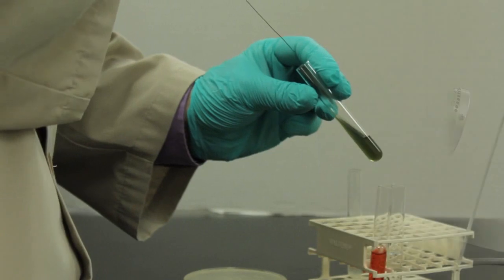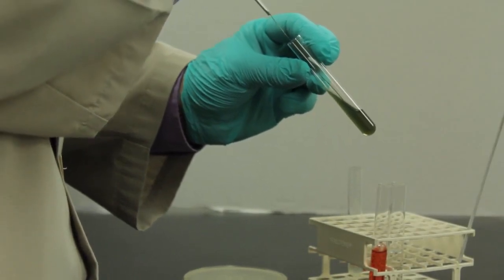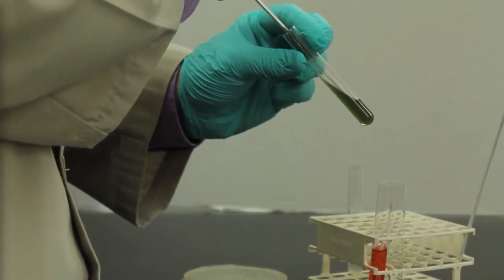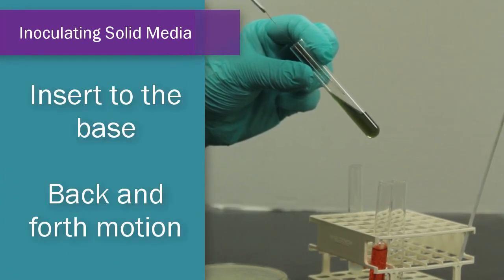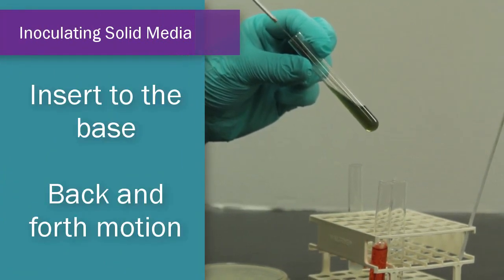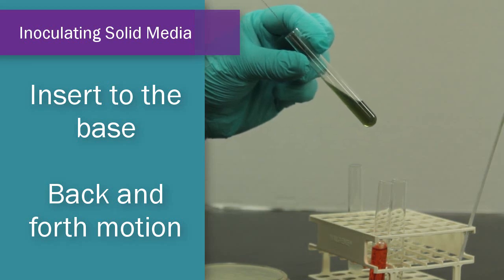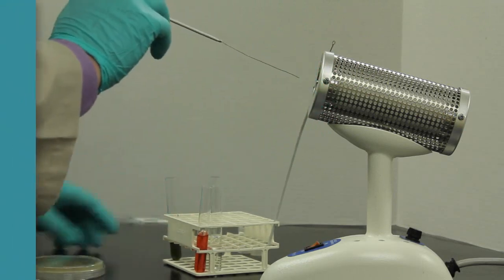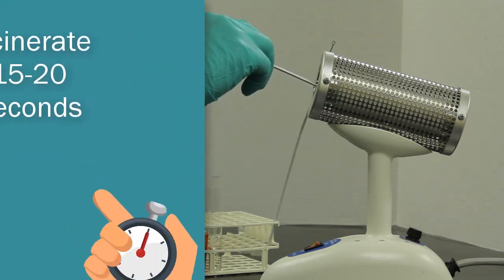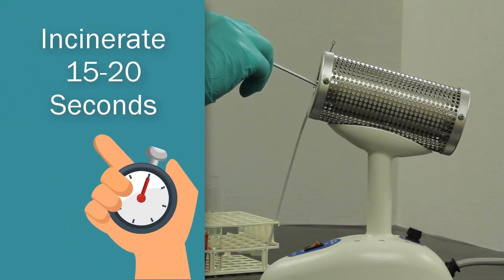Insert that needle into the center of the agar. Go directly down the center to the base. Once I feel it stab the base, I'll pull it right back out the same insertion point. And with a brisk back and forth movement, I will inoculate the slant itself. Once I've done that, incinerate the needle for another 15 to 20 seconds and you're ready to go again.